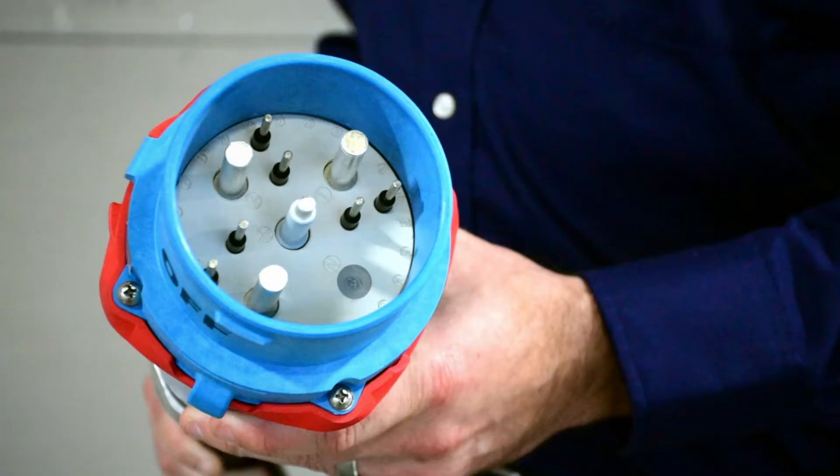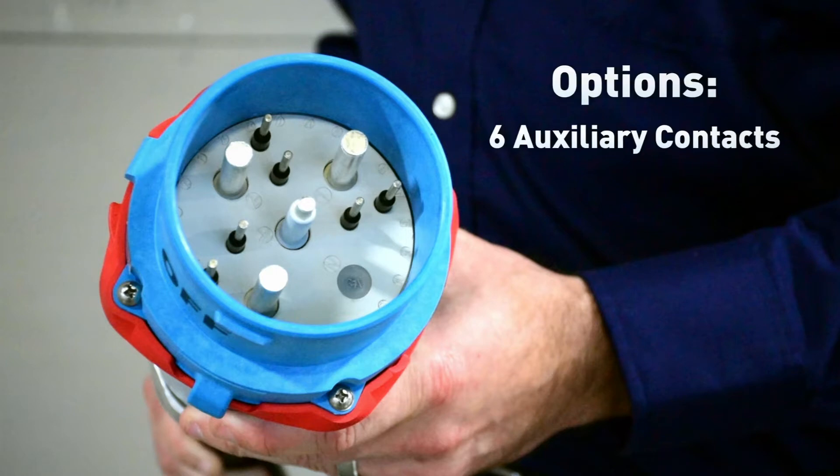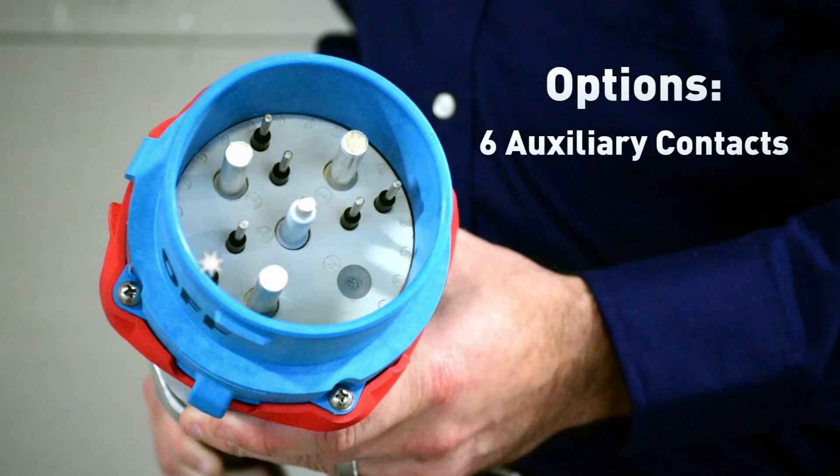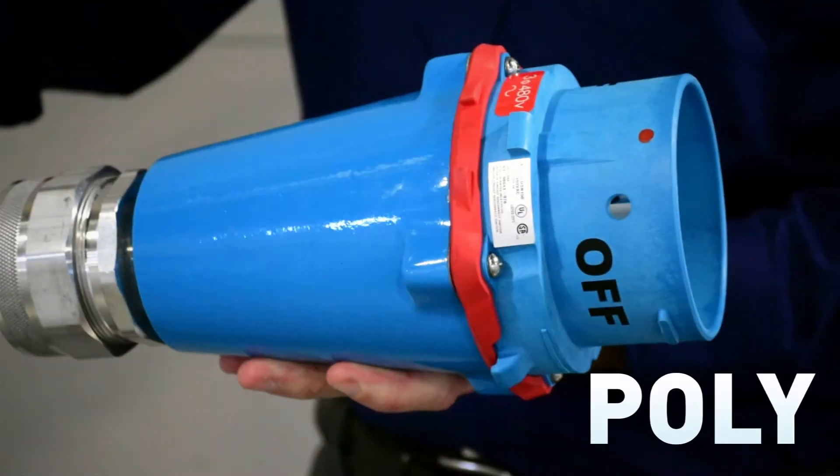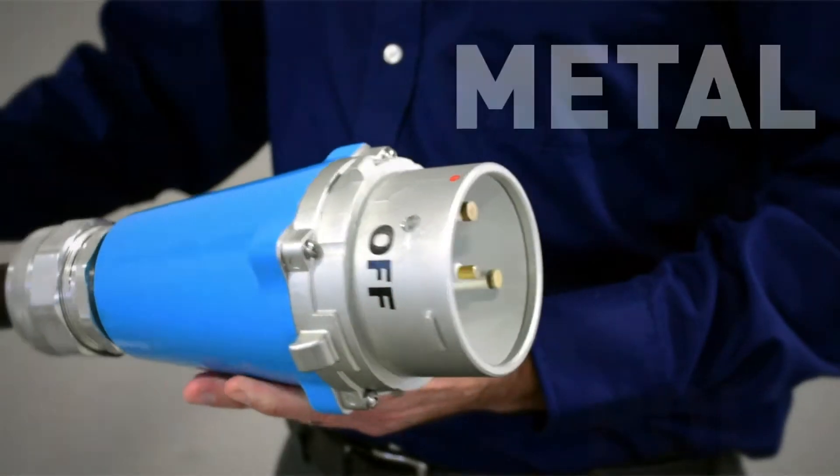The DSN-150 can be ordered with a variety of options, including up to six auxiliary contacts which are UL and CSA rated. It's available with your choice of reinforced poly or metal alloy casings.